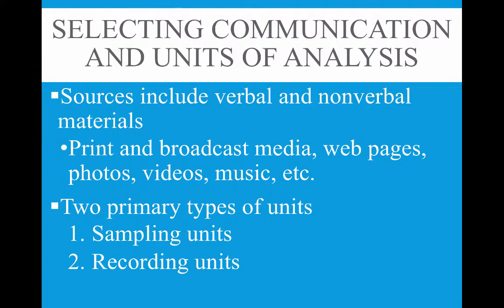There are two primary types of units: sampling units and recording units. Sampling units are the basis for identifying and sampling the target population — for example, all published reports on the Iraq War. Recording units, also known as coding units, are the part of the communication that's the basis for coding — whether you're looking at the entire report, just an article, just paragraphs, or certain phrases. In the book's example these end up being the same, but in many research cases they differ in nuanced ways.